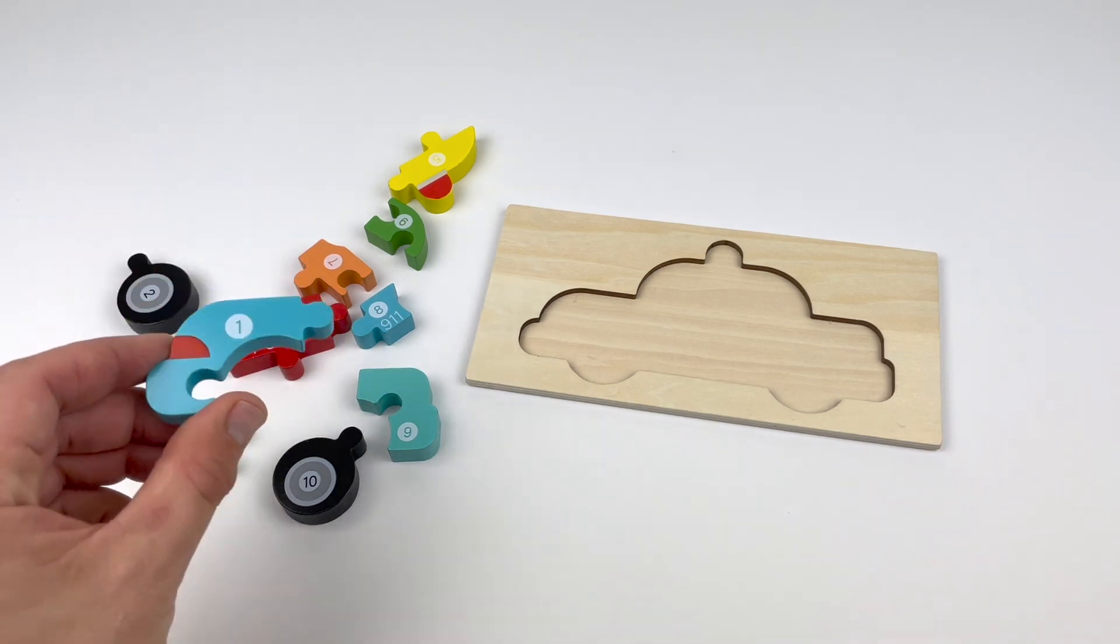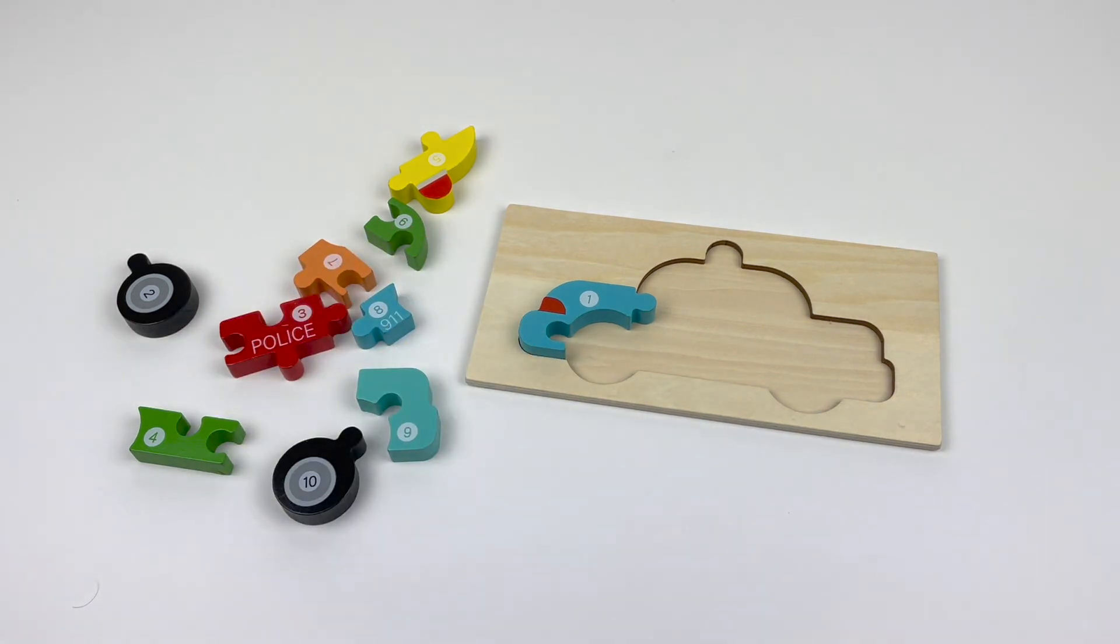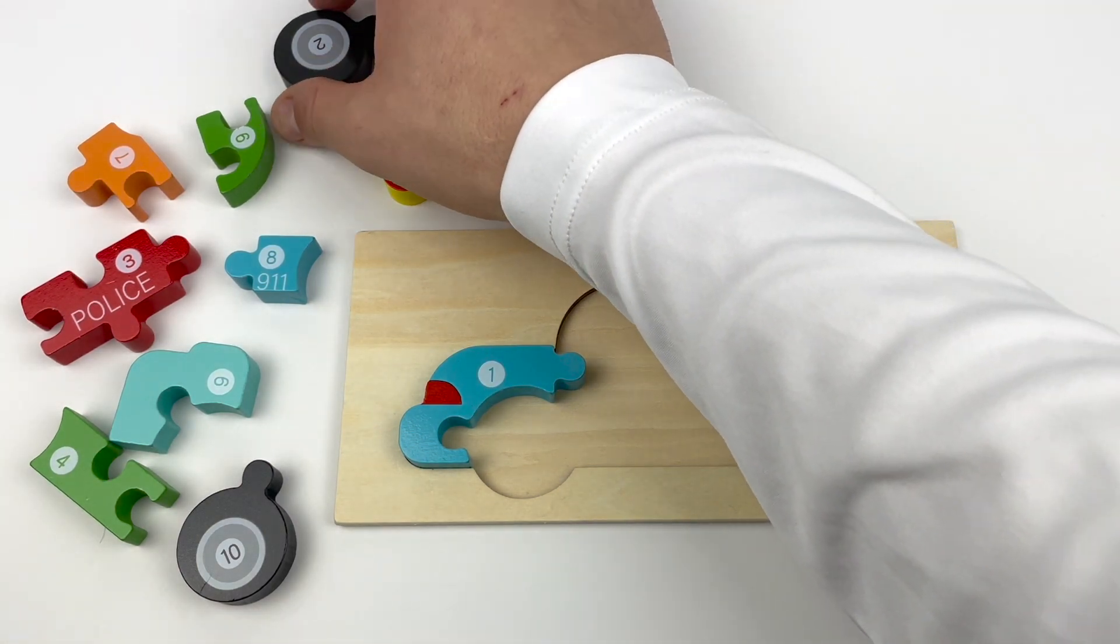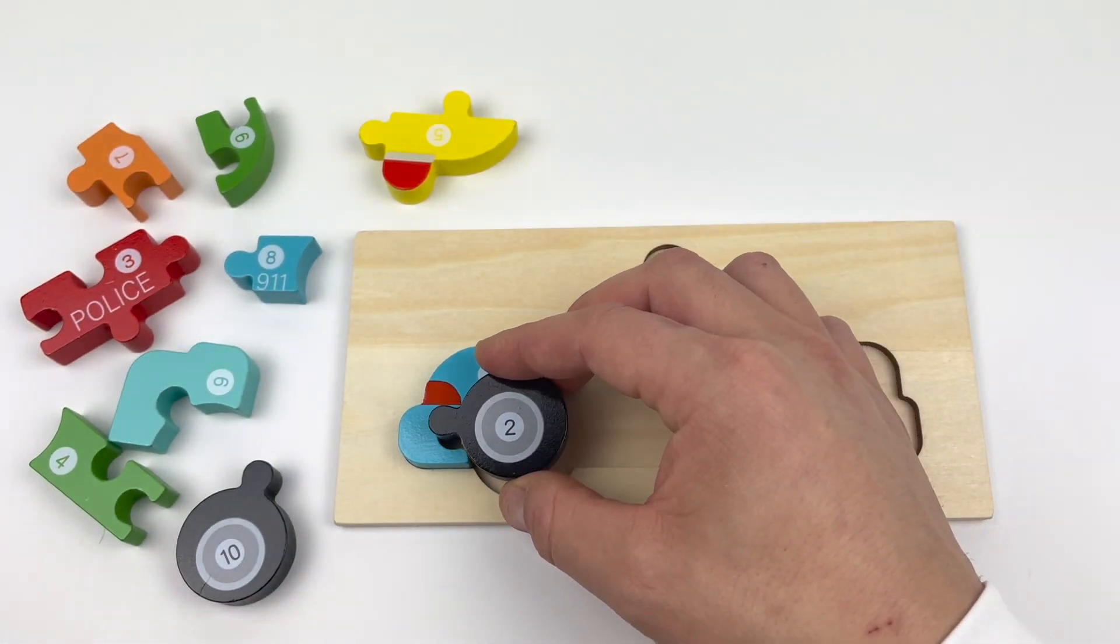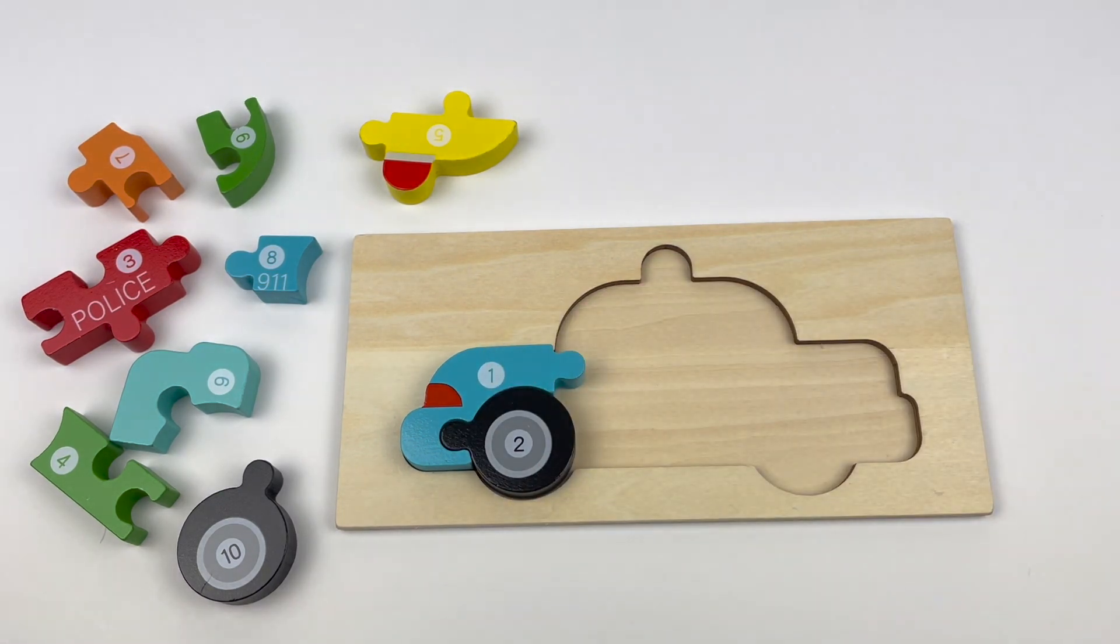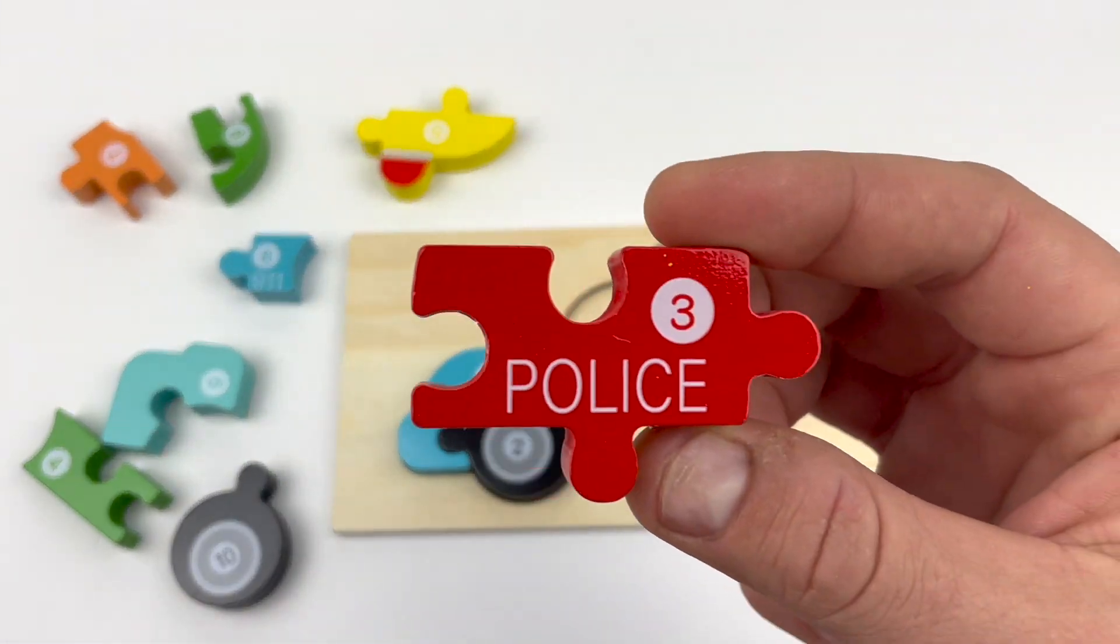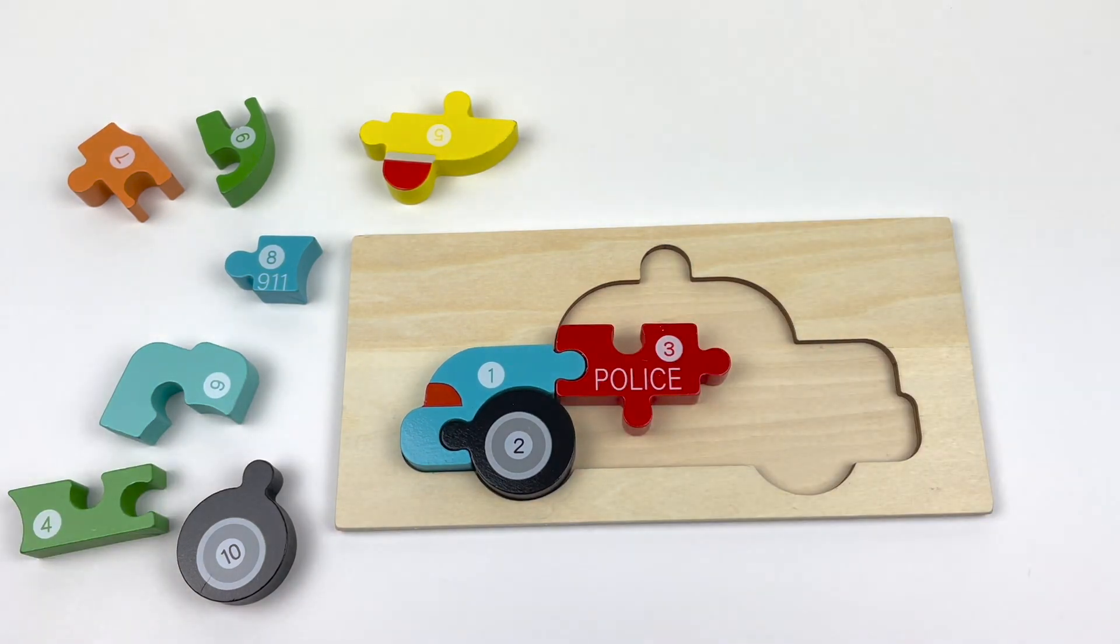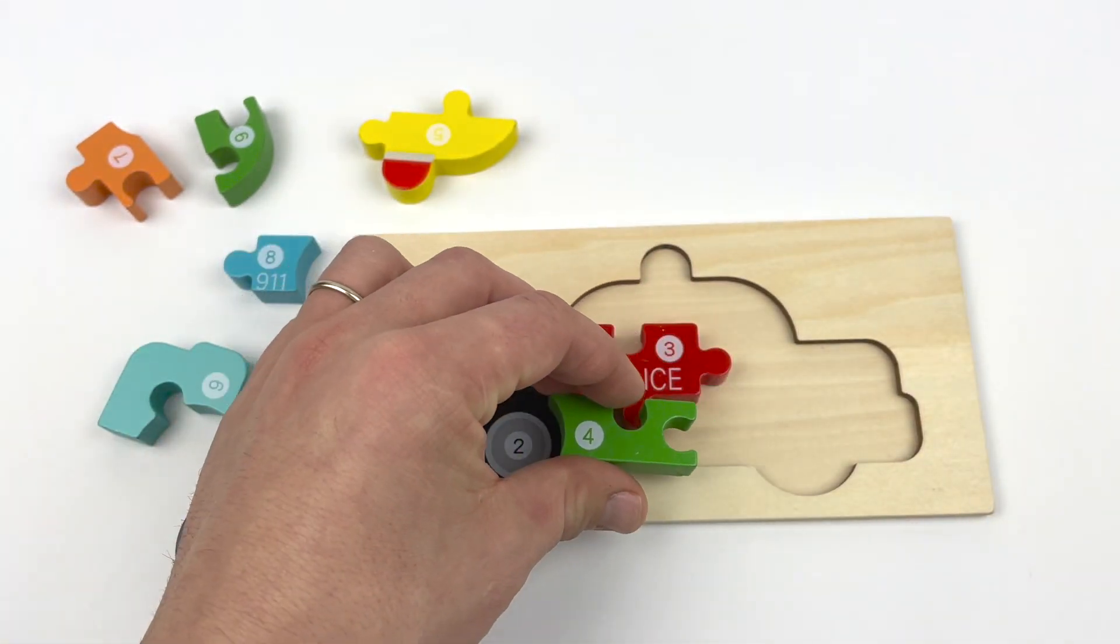Up for our next puzzle. One. What color is this? Blue. That's right. What goes after one? Number two, it is a black wheel. Number three, red. Red. Four. Green.